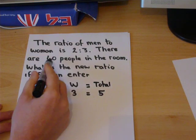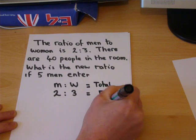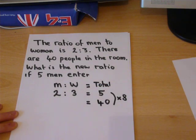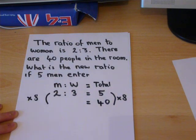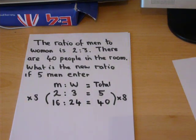But there are 40 people in the room. If there are 40 people, that must be 8 groups, because 5 times 8 is 40. So, there must be 16 men and 24 women, making 40 in total.